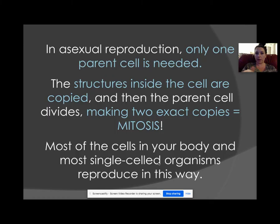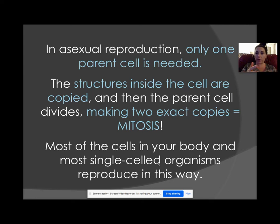In asexual reproduction, only one parent is needed. The structures inside the cell are copied, and it makes an identical copy — that process is called mitosis. This applies to most of the cells in our body, for example skin cells, which flake off very quickly.